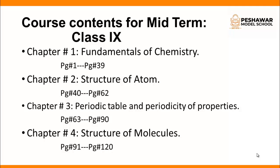In chapter 3 we will discuss the periodic table and periodicity of properties, including ionization energy, atomic size, atomic radius, electron affinity, and shielding effect.